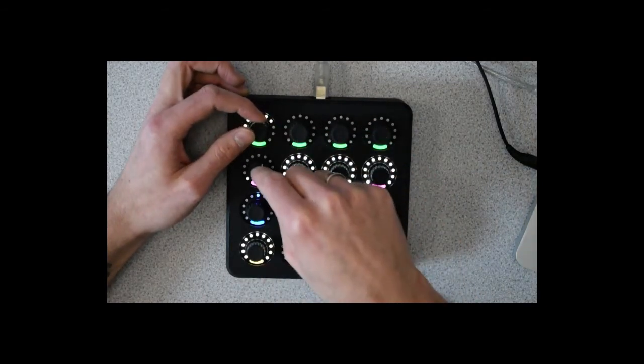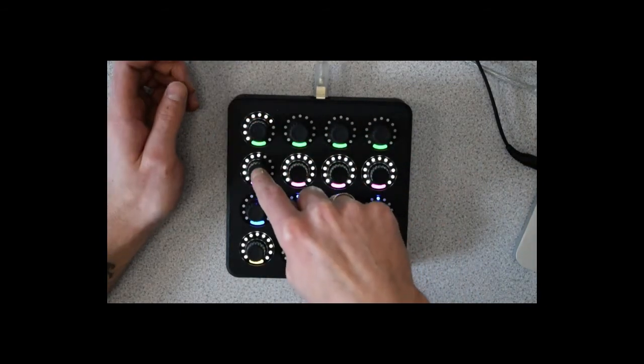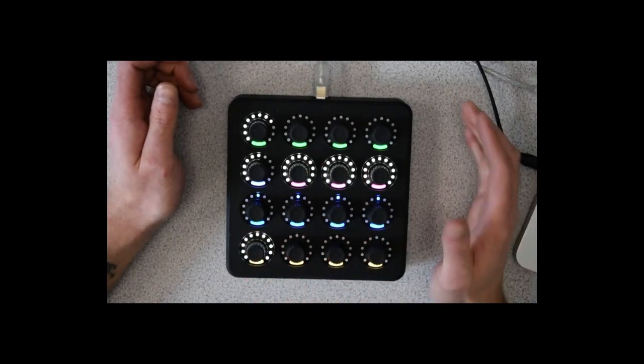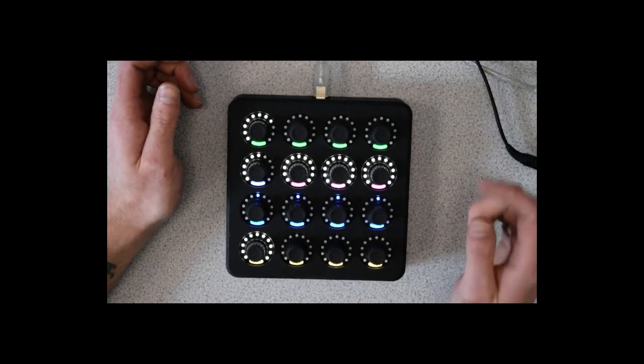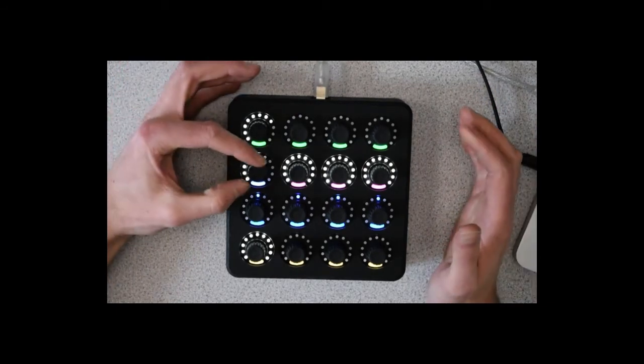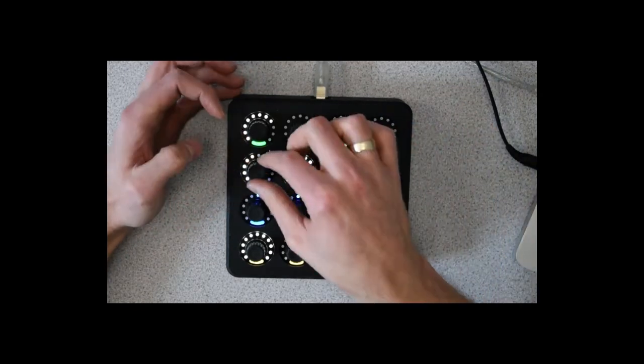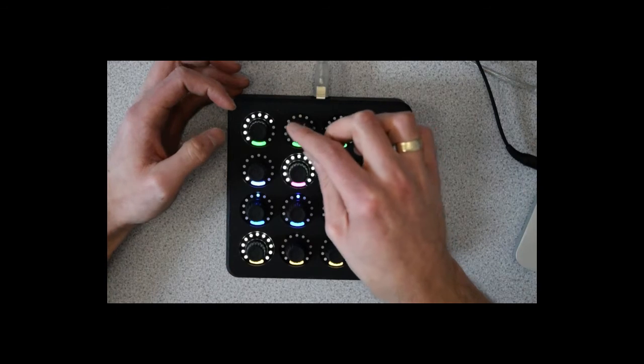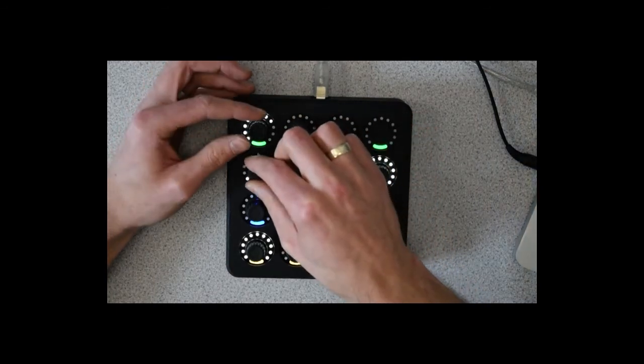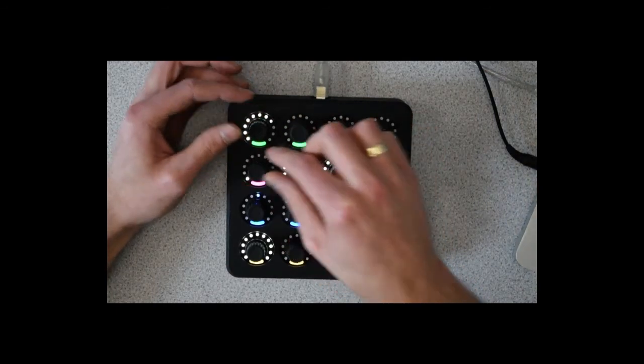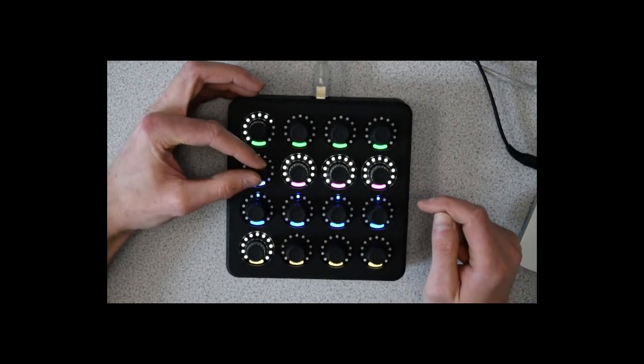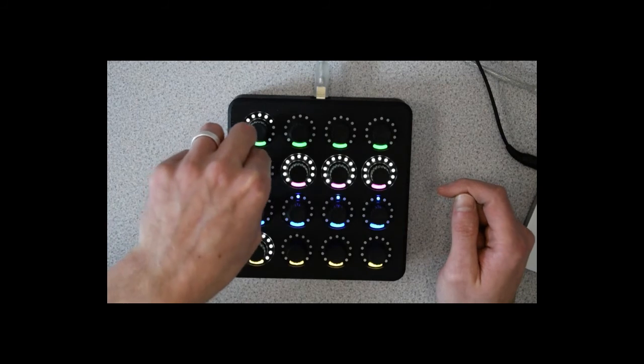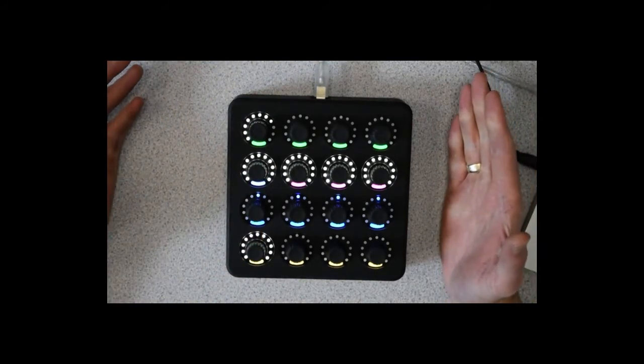If I press this encoder down, it brings up another parameter, and this is the frequency of which the grains are being treated. So I can turn this right down, I'll make that a bit longer. And then, alternatively, I can increase the grains.